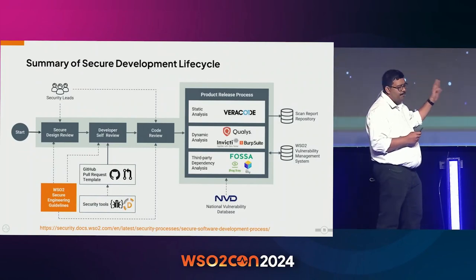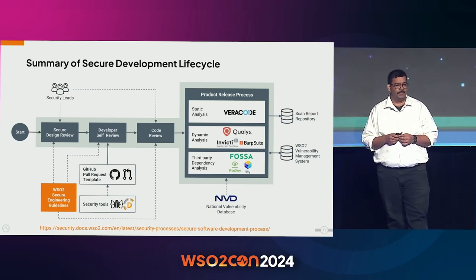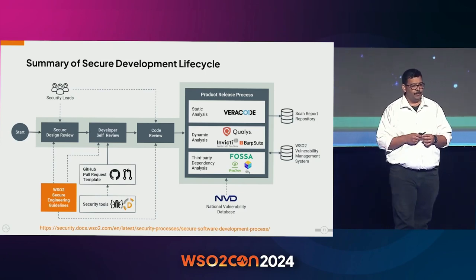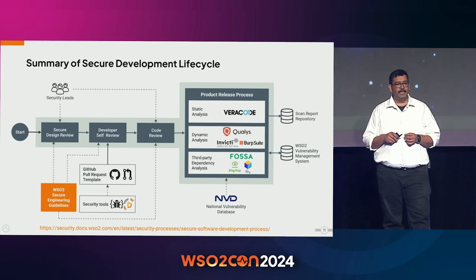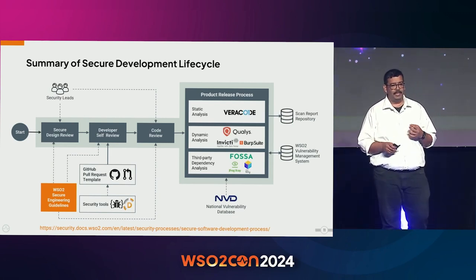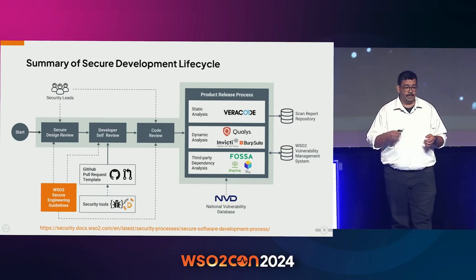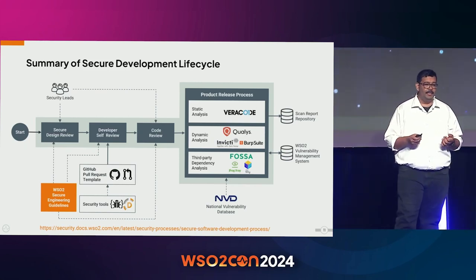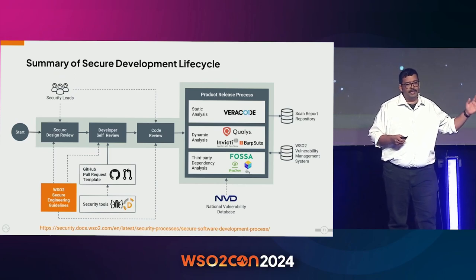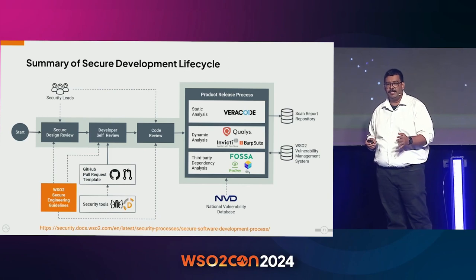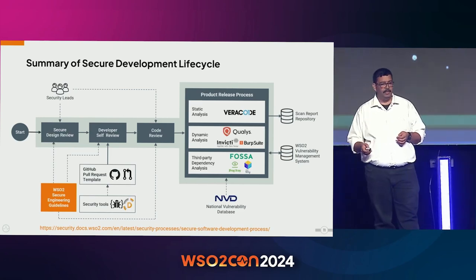Security is embedded in every stage of the process. For static analysis, we use Veracode. For dynamic analysis, we use Coalys, Invicti, and Burp Suite. For third-party dependency analysis, we use FOSSA primarily, and JFrog X-ray for some scanning. For Docker image scanning, we use Trivy. The security process starts in the very early stages, goes through every stage, and there is comprehensive testing at the final product release cycle as well.